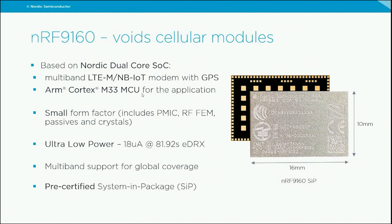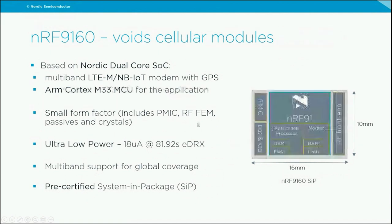It's really low power — down to 18 microamps average with 82-second eDRX sleep — with multi-band support for global coverage. We have pre-certified it so when you build a cellular device you don't have to do additional certification beyond the end-product certification required in some parts of the world. We've worked closely with partner Qorvo to build an optimized front end supporting up to 23 dBm maximum output power — the highest allowed in cellular networks for LTE-M and NB-IoT.